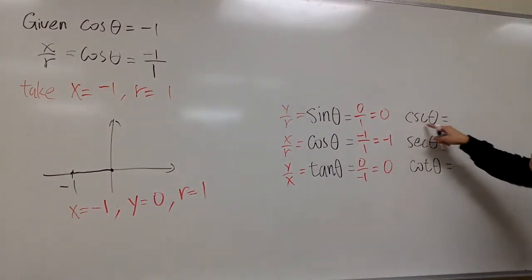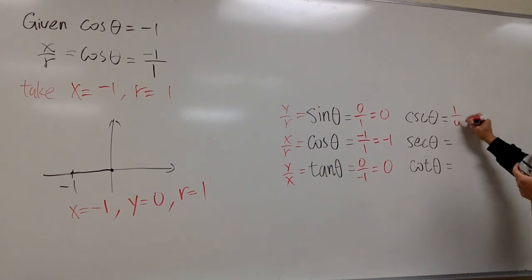All right, cosec theta is 1 over 0, but this is bad. So I will say this is undefined. Cannot have a 0 in the denominator.